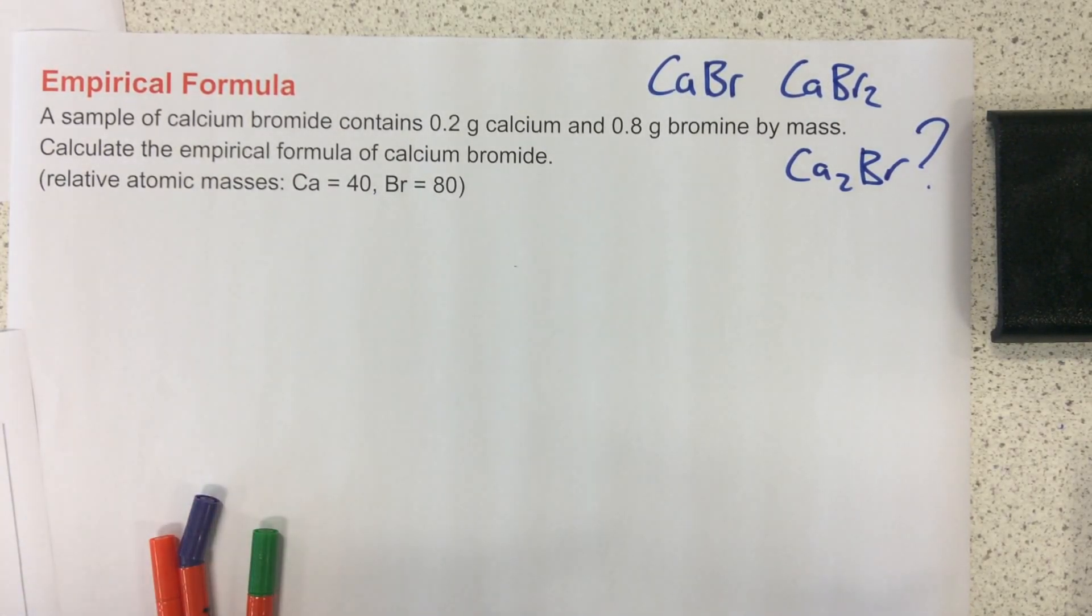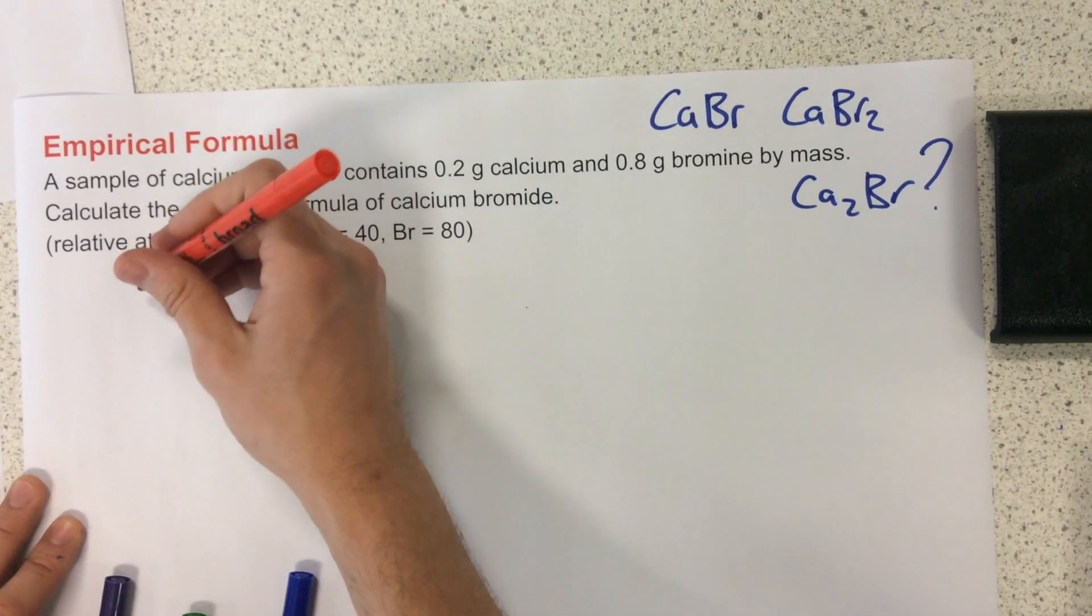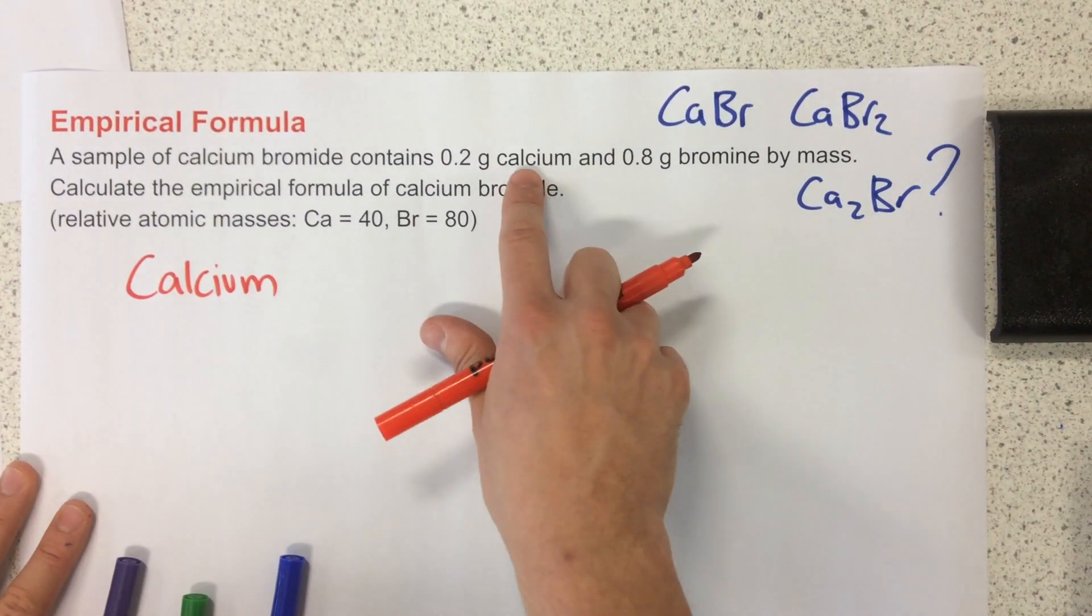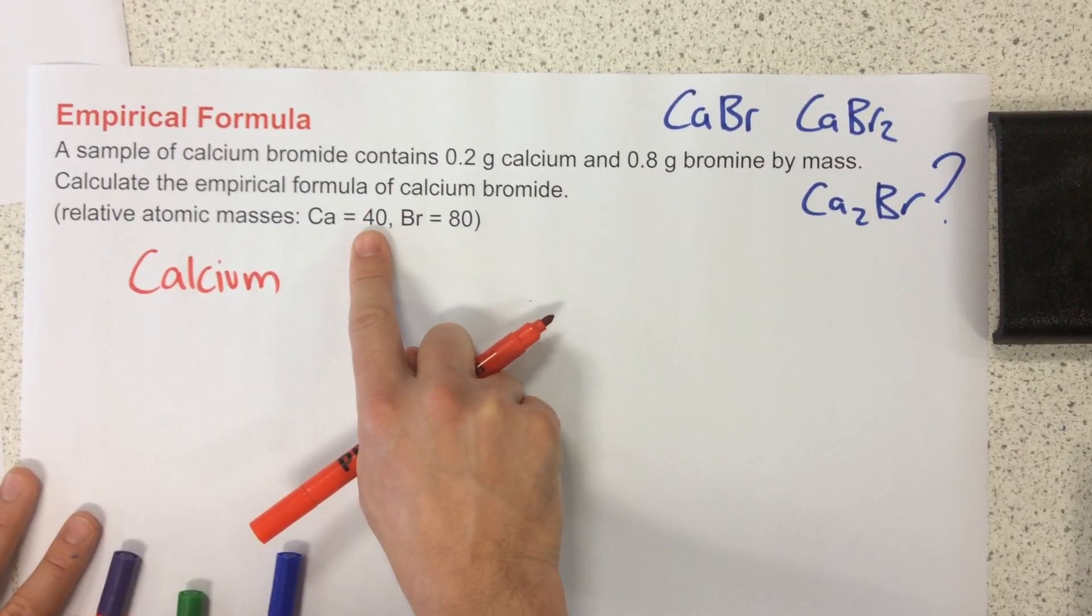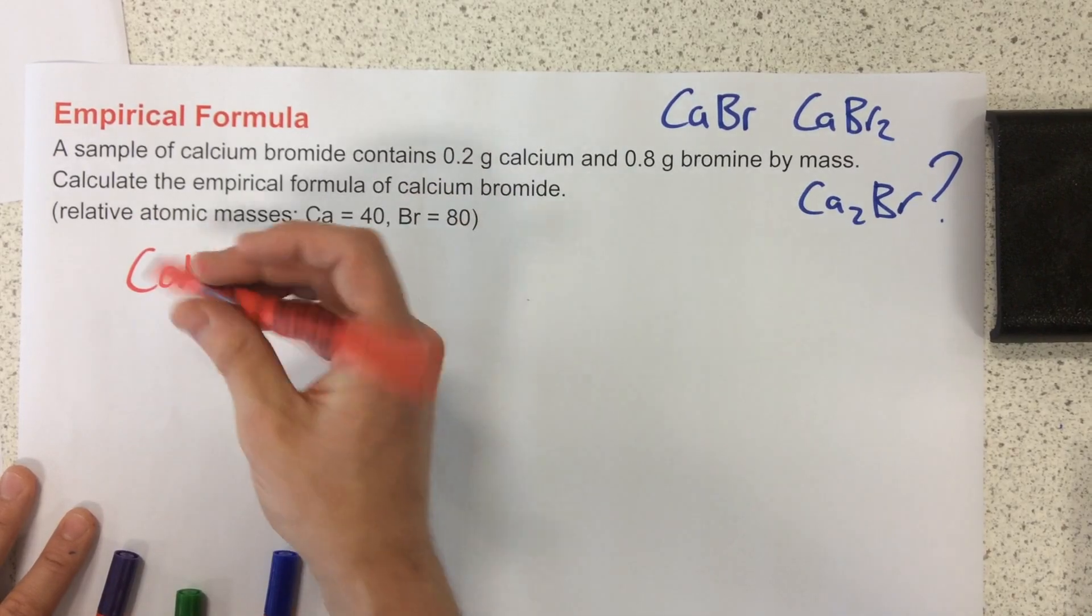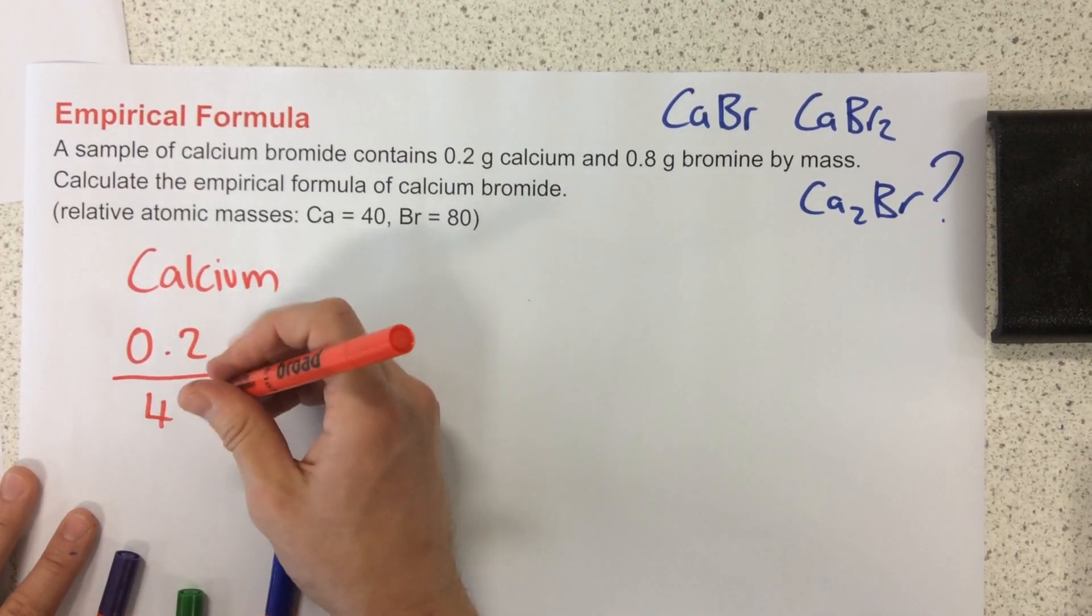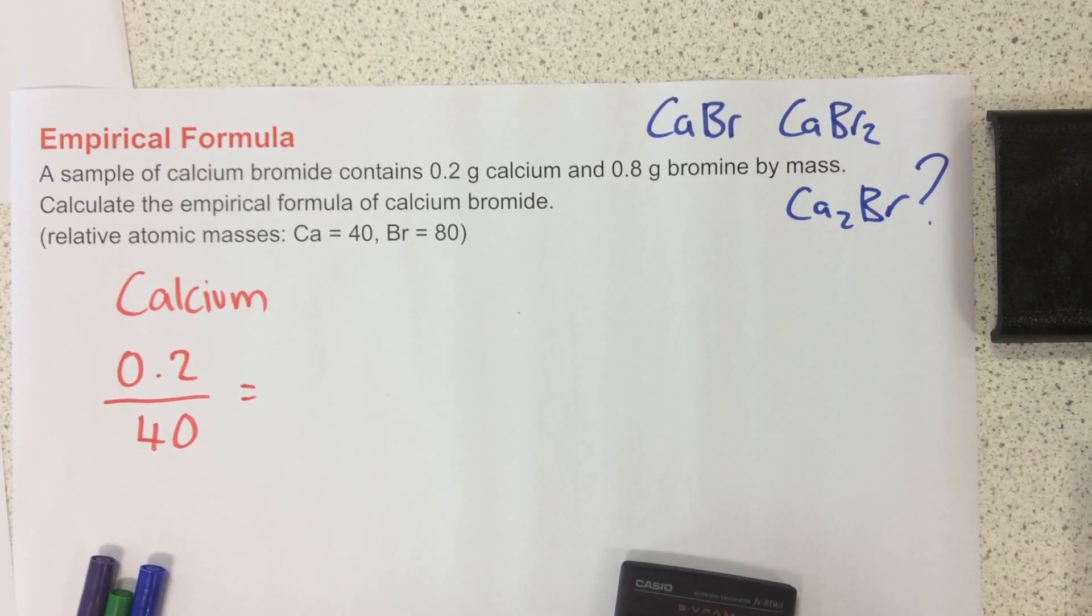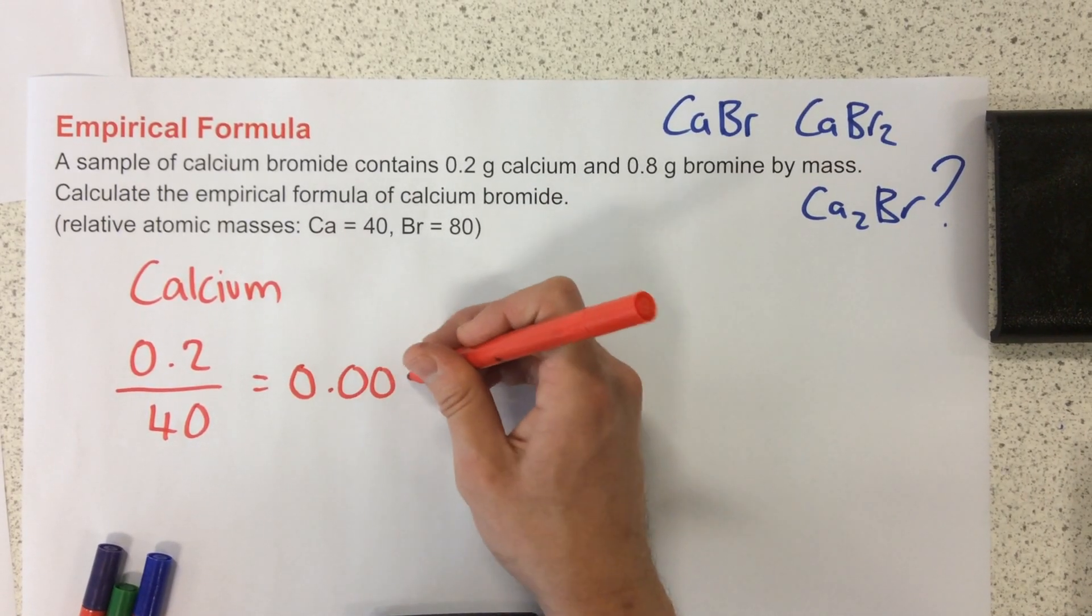So how do we go about this? The first thing that we need to do is we're going to kind of do one at a time. We're going to start off with calcium. So remember, because calcium and bromine each atom has a different mass from each other. Remember, bromine is about twice the mass. One atom of bromine is twice the mass of one atom of calcium. We need to factor this in. So what you need to do is you need to do the mass divided by the atomic mass. So 0.2 divided by 40 for calcium. Now that gives me 0.2 divided by 40. That gives me an answer of 0.005.